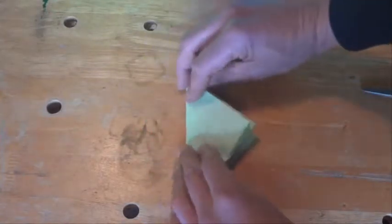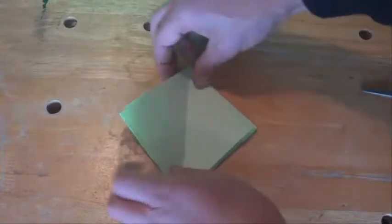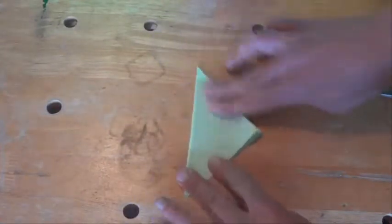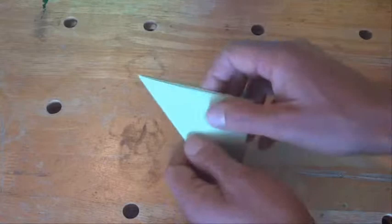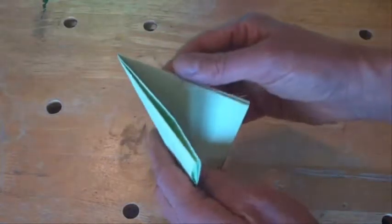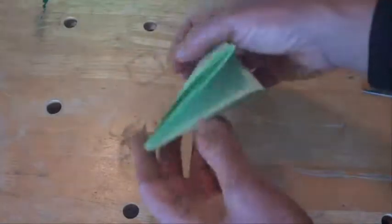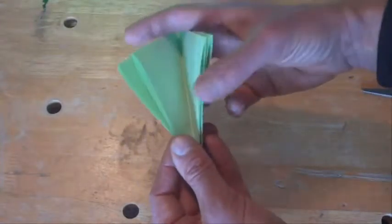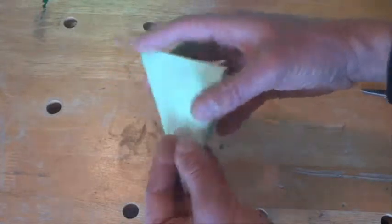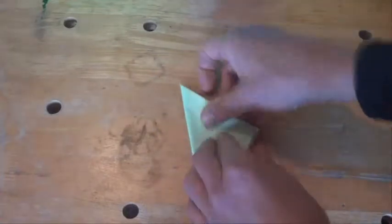Now all we need to do is fold that over, down that diagonal line you've already got there. And what we want to make sure is, the top there, we've got one, two, three, four, four of those folded lines, and down the bottom here, if you can open it up, you've got eight bits of paper there. So the eight bits go down below, and the four folds go up the top.